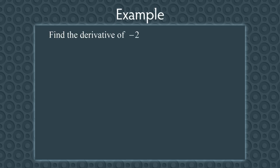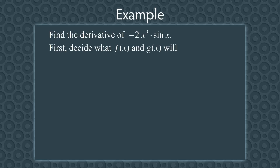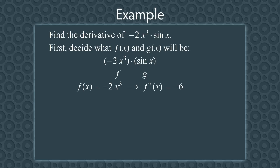Let's see another example. Let's find the derivative of −2x³ times sin(x). First, we have to decide what f(x) and g(x) will be. Let's group them so −2x³ is f and sin(x) is g. Since f(x) equals −2x³, the derivative of f is −6x². And g(x) equals sin(x), so g′ equals cos(x).